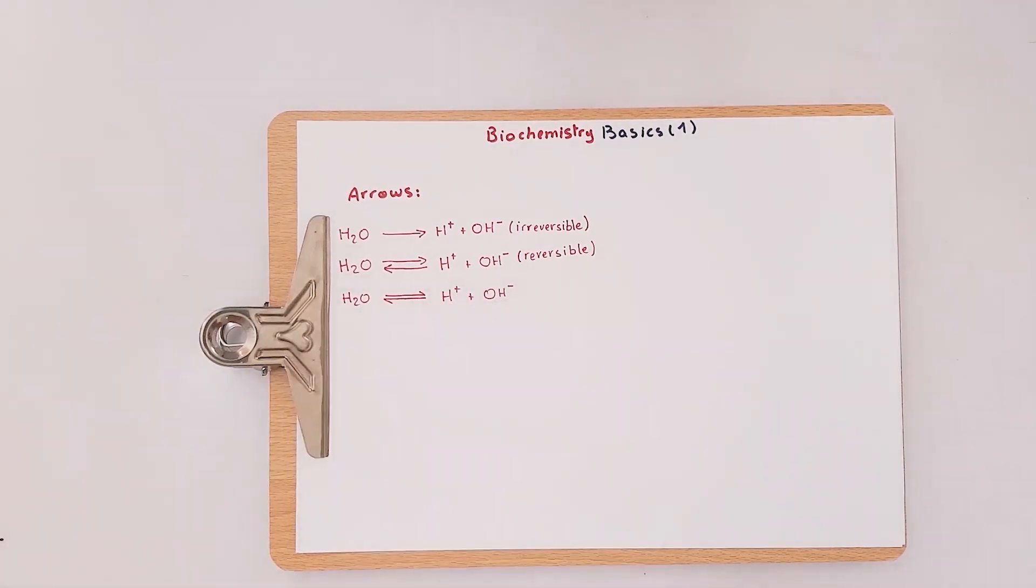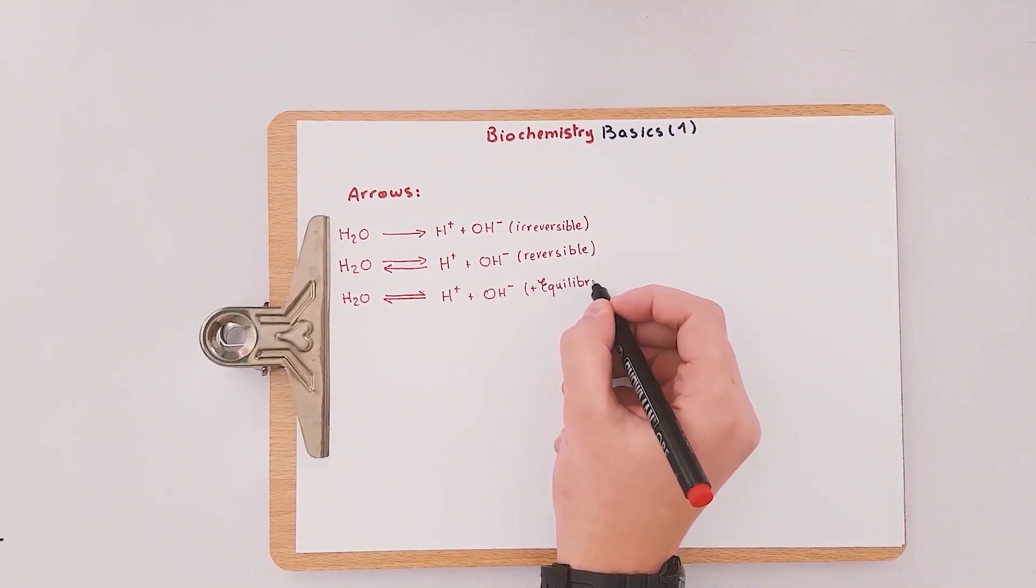The third arrow is just like the second one except that each arrow is halved, and this signifies that the reaction is reversible plus it reached the equilibrium state.